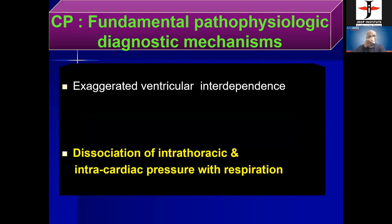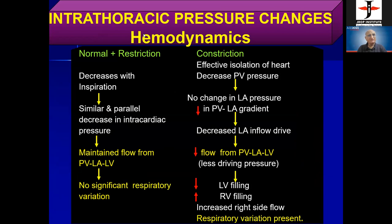The second mechanism is dissociation of intrathoracic and intracardiac pressure with inspiration. In a normal individual during inspiration, intrathoracic pressure decreases by about 3 to 5 millimeters. The pulmonary vein is not covered by the pericardium. This decrease leads to a similar decrease in the pulmonary venous chamber pressure, so the driving force for flow from pulmonary vein to LA and LV is maintained, resulting in no significant respiratory variation.